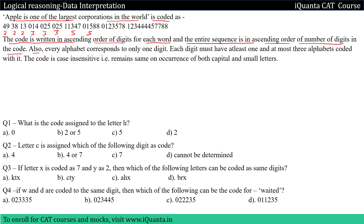Also, every alphabet corresponds to only one digit — it won't be the case that one alphabet is under two digits. Further, each digit must have at least one and at most three alphabets coded with it. The code is case insensitive — it remains the same on occurrence of both capital and small letters.